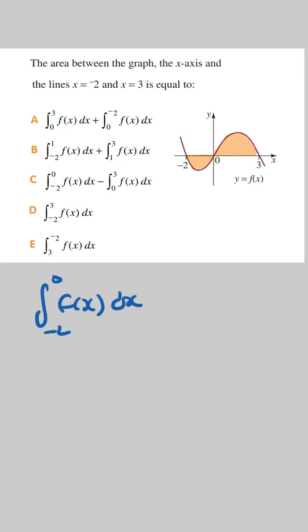Now because this is below the x-axis we need to multiply this by a negative 1 to get a positive value. Then we need to add the area of the region on the right hand side and so this is going to be found by integrating from 0 to 3 of f of x dx.